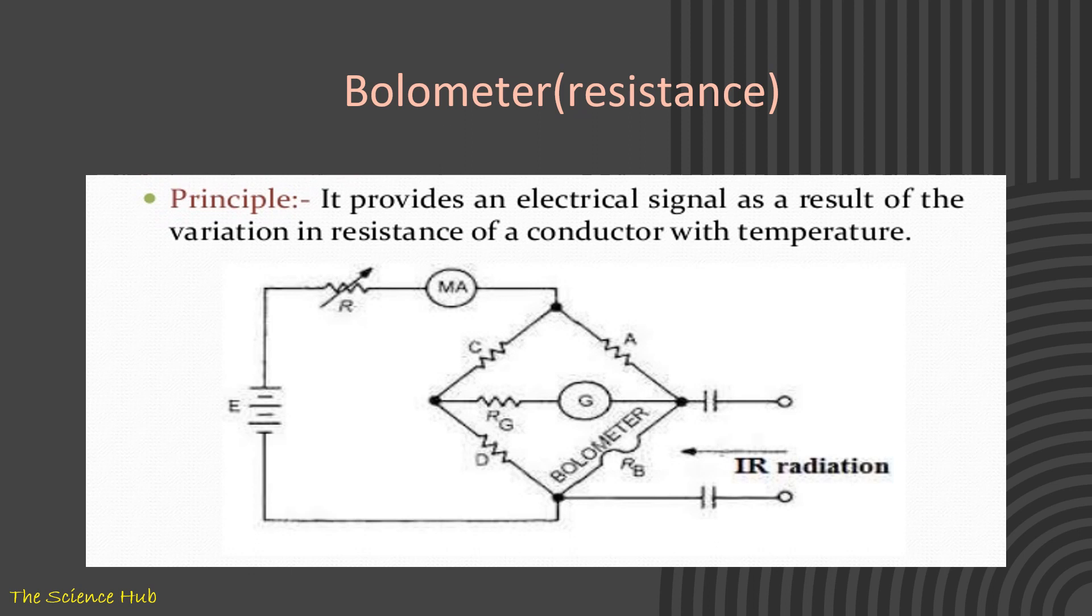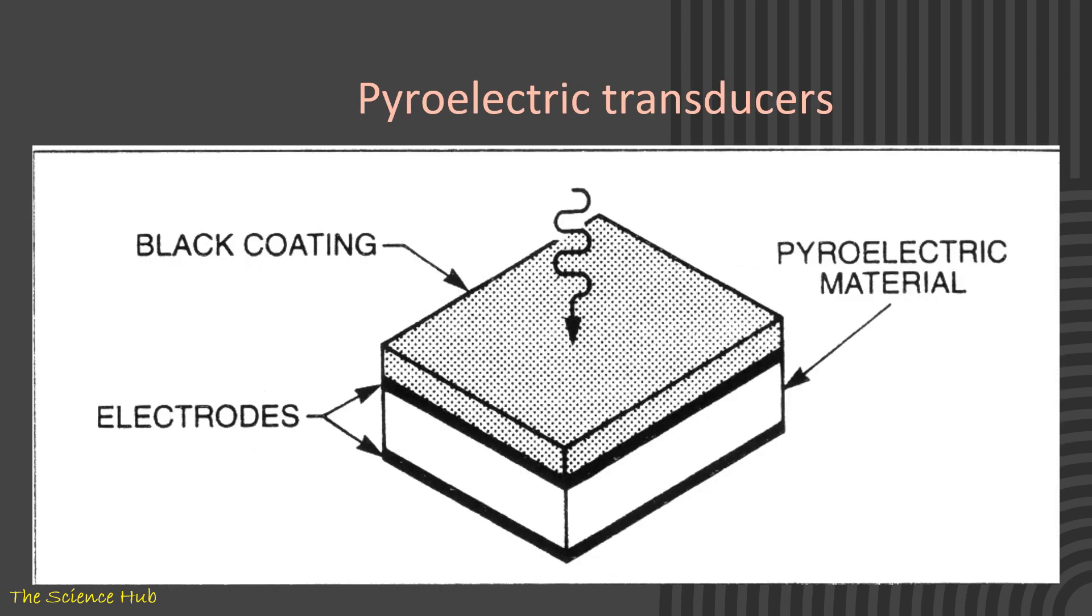Pyroelectric transducers: these are the arrangement of pyroelectric transducers. You can see there are three layers—black coating, pyroelectric material, and two electrodes. Here you can observe photoconducting type of transducer.